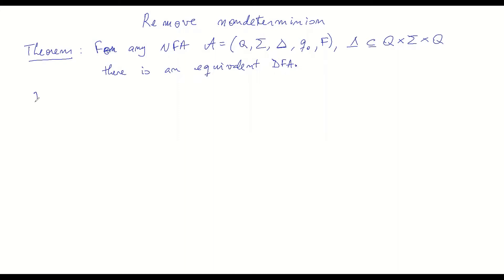I would like to first give you an intuition for how this construction might work. Remember how the non-deterministic automaton works: you start from Q0, which is your initial state, and then you read letter by letter. The fact that we don't have to worry about epsilon transitions simplifies our reasoning. So you start from Q0 and you read the first letter from your input.